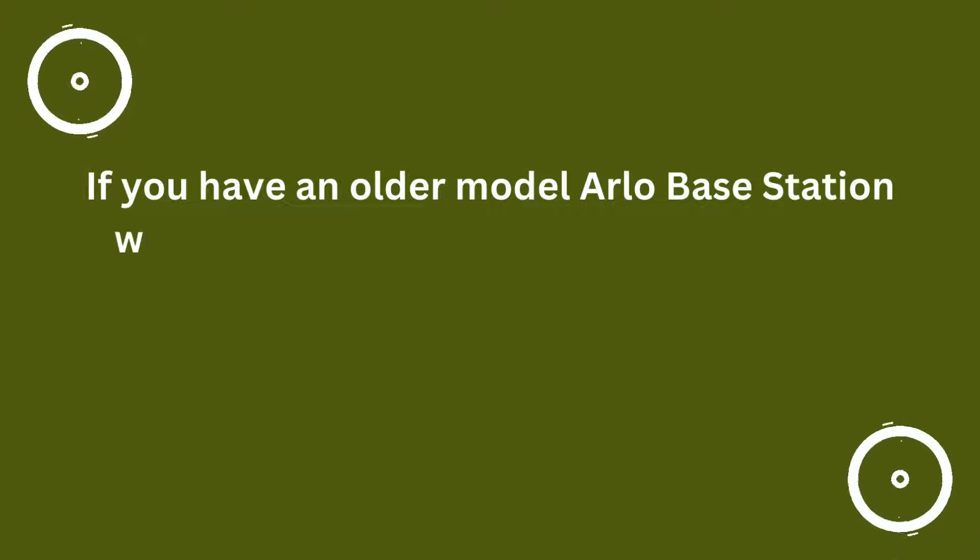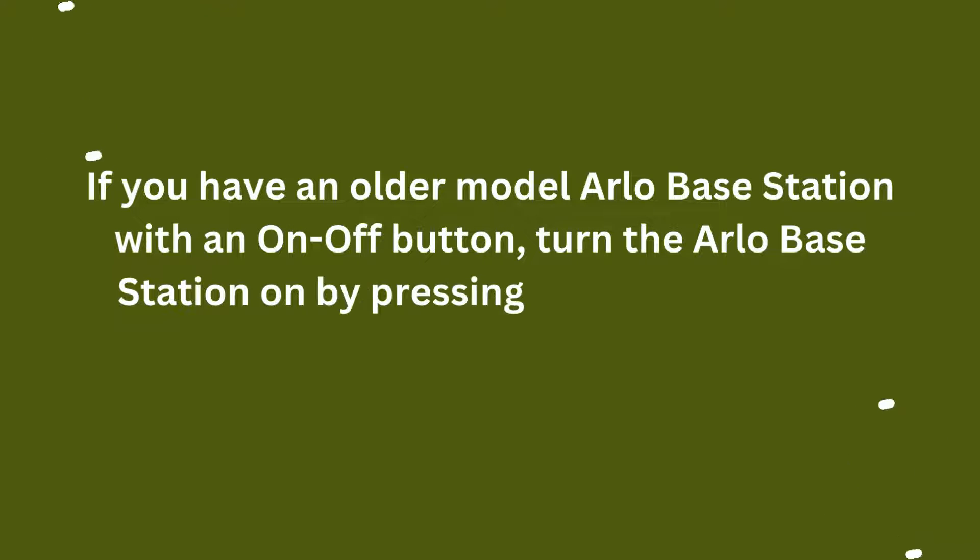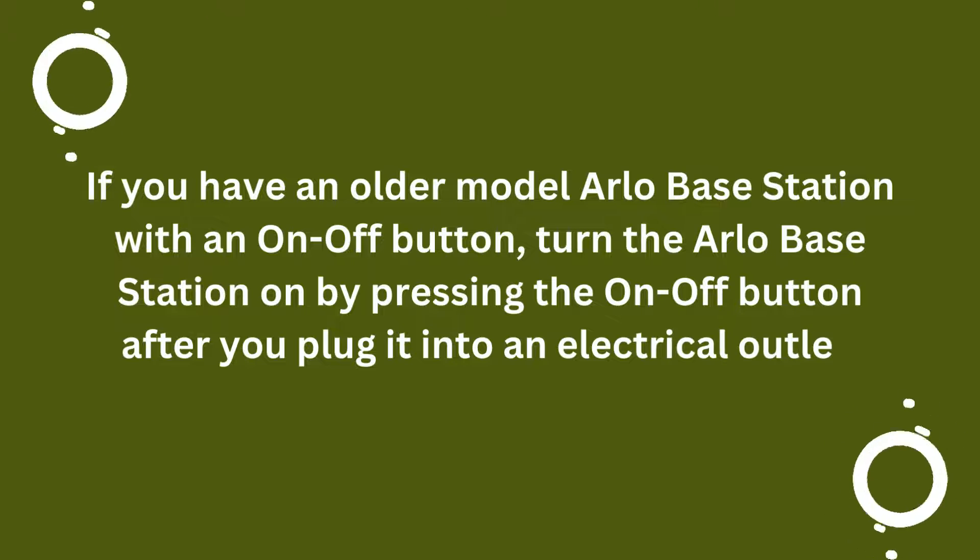If you have an older model Arlo Base Station with an on-off button, turn the Arlo Base Station on by pressing the on-off button after you plug it into an electrical outlet.